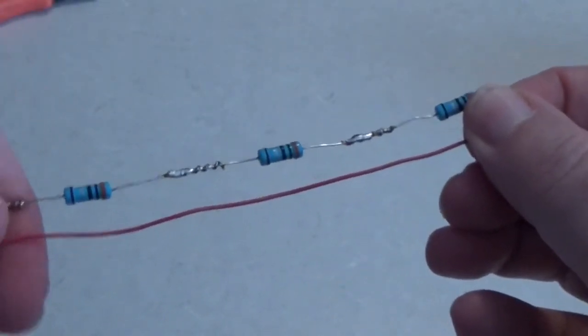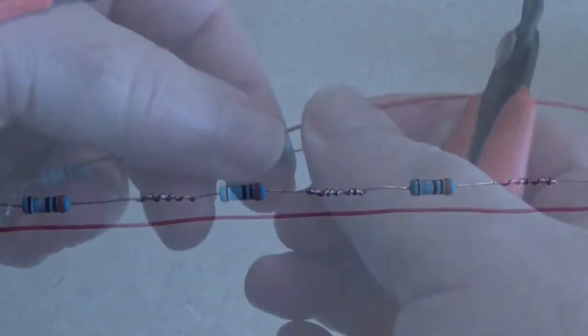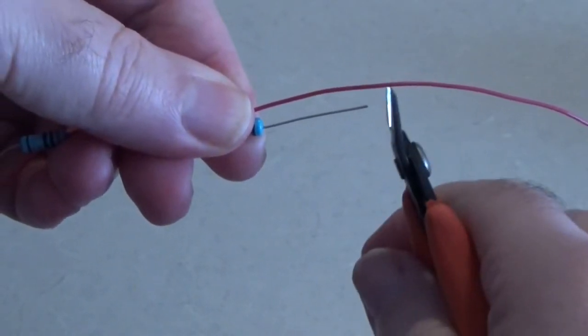Bend the wire so it runs parallel to the line of resistors. At the end, clip the wire so it's the same length as the line of resistors.